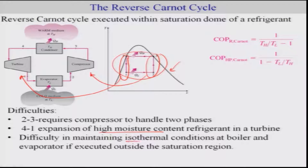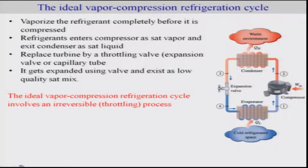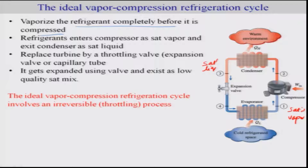We may like to change this Carnot cycle such that some part operates outside the saturation dome, but the difficulty is the same as observed for the vapor power cycle. If you want to maintain isothermal conditions at the boiler and evaporator, it becomes difficult when some part is outside, such as the condenser. The alternative is to completely vaporize the refrigerant before it gets to the compressor, meaning that at the compressor inlet we have saturated vapor, which is then compressed to superheated vapor. The refrigerant is completely condensed to liquid, and a turbine is replaced by an expansion valve, giving a low-quality mixture at the outlet.